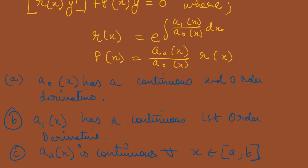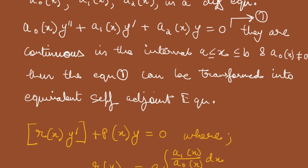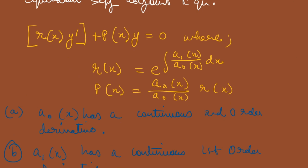Alright students, so what did we learn in this part? We've learned about the self-adjoint equation: what is its definition and how the equation looks. These important points you should know. That's it for this part of the video. We shall continue with this in the next part. Thank you for watching, see you next time, bye bye.